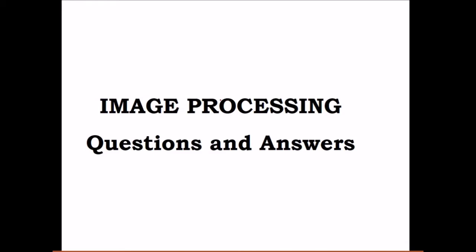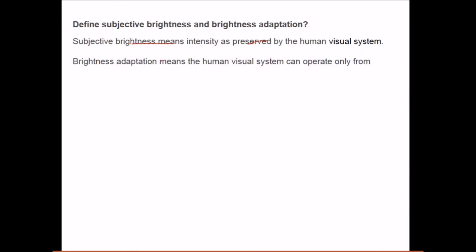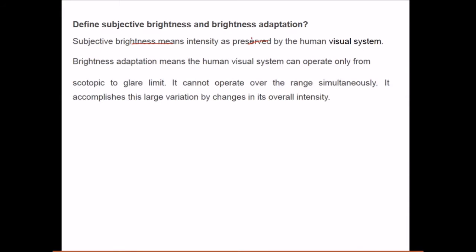Let us see a few questions and answers in image processing. First, subjective brightness and brightness adaptation. Subjective brightness means intensity as perceived by the human visual system. Brightness adaptation means that the human visual system can operate only between a scotopic and photopic limit, and it cannot operate over the entire range simultaneously. It accomplishes this large variation by changes in its overall intensity, which is brightness adaptation.